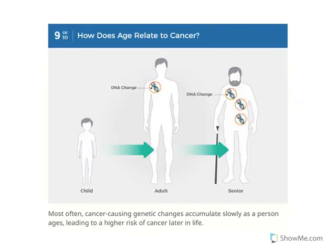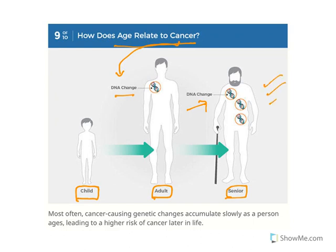How does age relate to cancer? The basic reason for cancer is DNA change — mutation. DNA change is very low in children, some change occurs in adults, but in elderly people the DNA change is very rampant. That is why most elderly people are dying with cancer — the genetic changes are very high in proportion.